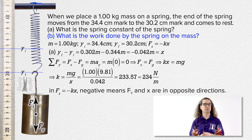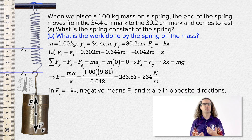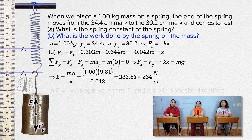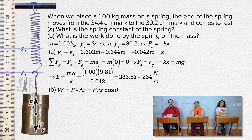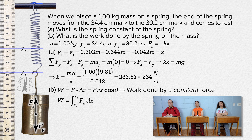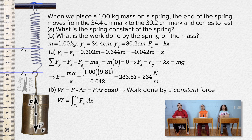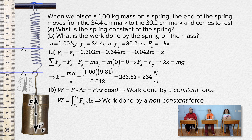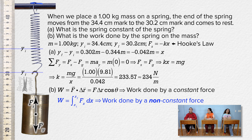Now we need to do part B: determine the work done by the spring on the mass during this event. Billy, we currently have two equations for work — what are they, which one are we going to use, and why? Work equals the dot product of force and displacement, and work equals the integral from initial to final position of force in the x direction with respect to x. The dot product equation is for work done by a constant force, and the integral equation is generally used when the force is not constant. The force of the spring changes depending on displacement from equilibrium position, so the spring force is not constant — we use the integral equation.